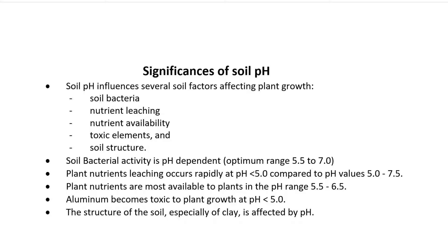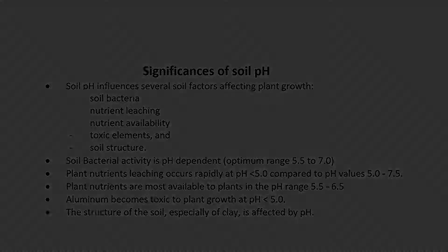Aluminum may become toxic to plant growth in soils with a pH below 5. The structure of the soil, especially of clay, is affected by pH. In the optimum pH range of 5.5 to 7, clay soils are granular and easily worked, whereas if the soil pH is extremely acidic or extremely alkaline, clay tends to become sticky and hard to cultivate.